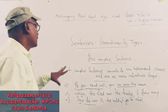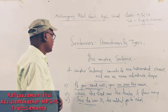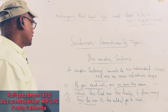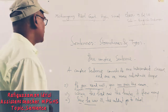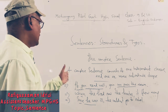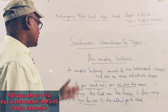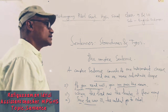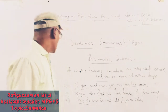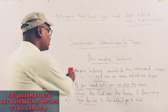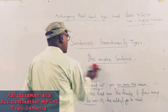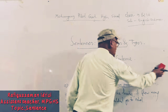In every complex sentence, the independent clause and the subordinate clause are joined by a subordinating conjunction. There are many subordinating conjunctions such as: if, since, when, as, till, until, before, after, that, while, etc. These subordinating conjunctions must be used before the subordinate clause.